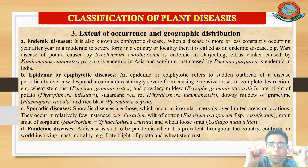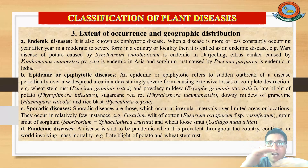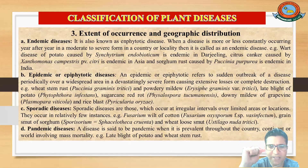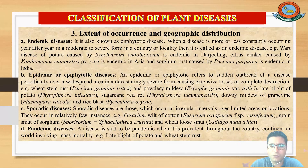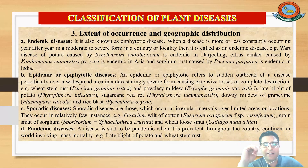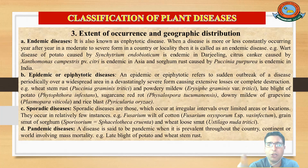Number three is sporadic disease. These are diseases that occur at irregular intervals, in a limited area or location. Examples include Fusarium wilt of cotton and grain smut of sorghum and wheat loose smut. You cannot determine when these diseases will occur — they appear at irregular intervals in a limited area and are therefore called sporadic diseases.